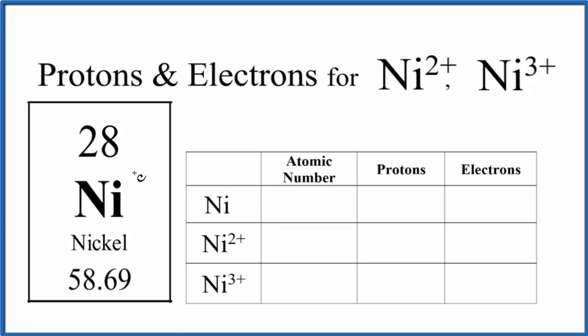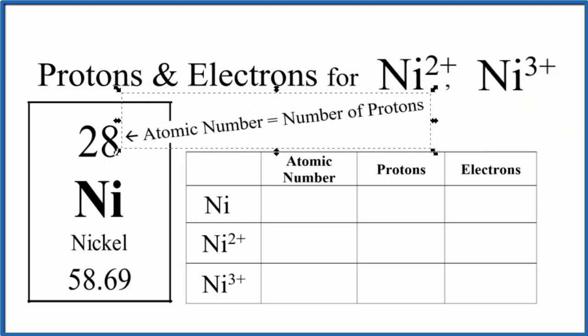When we look at the periodic table, we can see that the atomic number for nickel is 28. So the atomic number for Ni is 28, and that's the same for the ions as well. If you have nickel, it's going to be 28 for the atomic number.